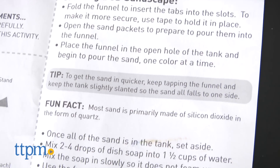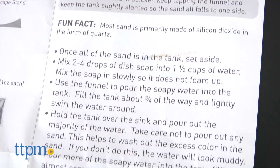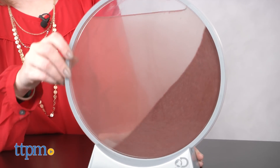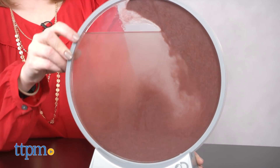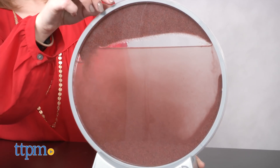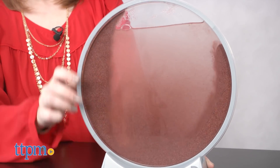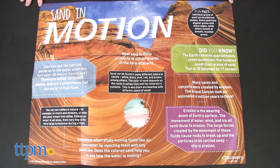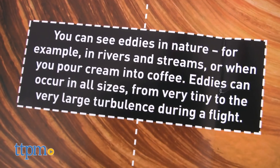Just follow the instructions to fill the sandscape with sand and soapy water, and then every time you rotate the sandscape display in the base, gravity kicks in, pulling the sand down into the water and creating swirling patterns. These are called turbulent eddies, a phenomena that occurs in fluid flow. A large color poster provides more information about sand, water, and eddies.